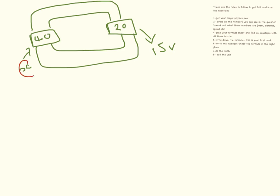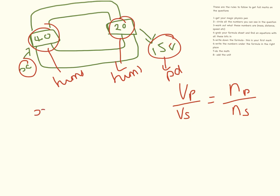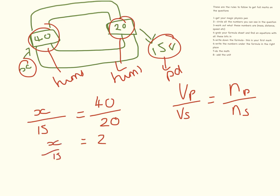In our next question we need to find the potential difference going into the transformer — so the potential difference in the primary. Again we have Vp over Vs equals Np over Ns. The potential difference in the primary coil is what we're trying to find. The number of turns in the primary coil is 40 and the number of turns in the secondary coil is 20. So 40 divided by 20 equals 2, and rearranging: x equals 15 times 2, so x equals 30 volts.